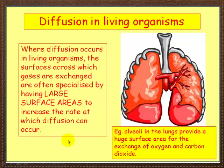In living organisms, diffusion occurs in many places. The surfaces across which gases are exchanged are often specialized and have large surface areas, because a large surface area increases the rate of diffusion. A great example is the human lungs, which contain little structures called alveoli that provide a huge surface area. It's often said that if you spread out all the alveoli, you'd have an area the size of a tennis court — which makes them enormously effective for exchanging oxygen and carbon dioxide.